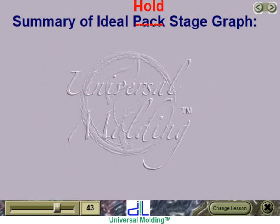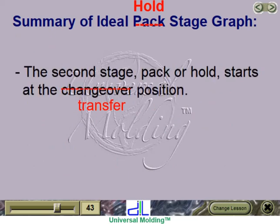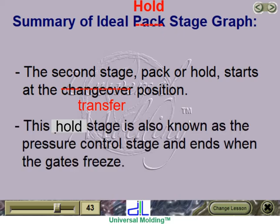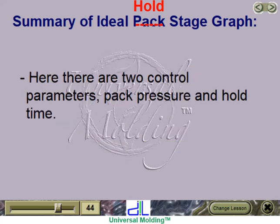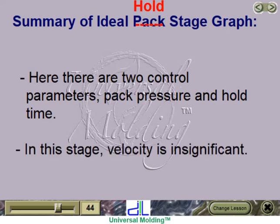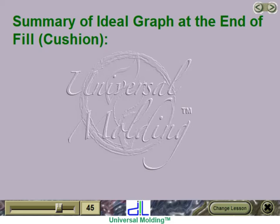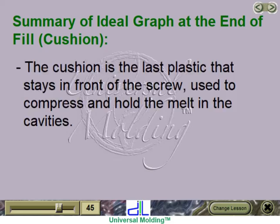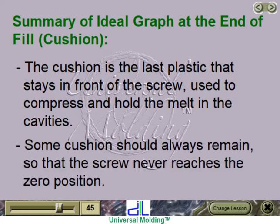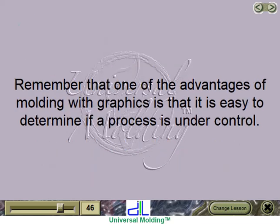Summary of ideal pack stage graph: The second stage — pack or hold — starts at the changeover position. This pack stage is also known as the pressure control stage and ends when the gates freeze. There are two control parameters: pack pressure and hold time. In this stage, velocity is insignificant. The cushion is the last plastic that stays in front of the screw, used to compress and hold the melt in the cavities. Some cushion should always remain so that the screw never reaches the zero position. One of the advantages of molding with graphics is that it is easy to determine if a process is under control.